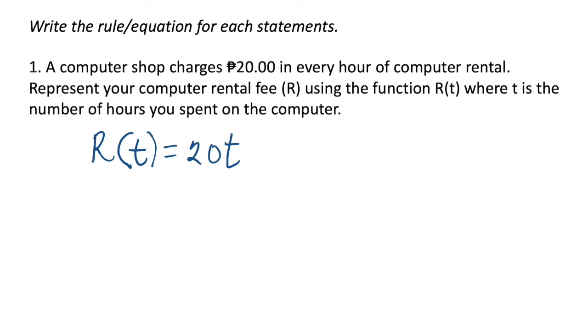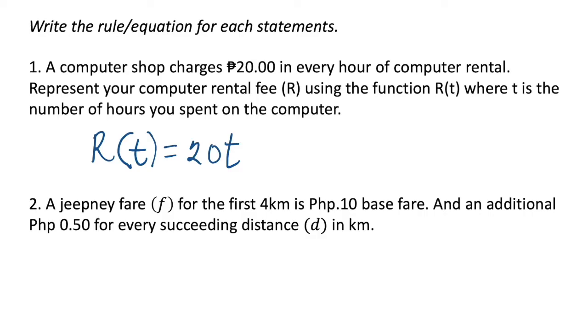Second example: a jeepney fare F for the first four kilometers is 10 pesos base fare and an additional 50 cents for every succeeding distance d in kilometers. We could write the function as F(d), which is the constant value 10 plus the succeeding kilometer or distance we're going to pay, 0.50. So we add 0.5 times d as a rule: F(d) = 10 + 0.5d.